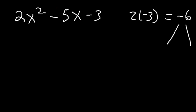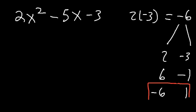If we multiply 2 and negative 3, that doesn't add to negative 5 — that adds to negative 1. But if we use negative 6 and 1: negative 6 plus 1 is negative 5, and negative 6 times 1 still multiplies to negative 6. So these are the numbers that we want.